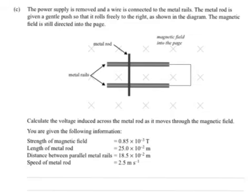The power supply is removed and the wire is connected to the metal rails. The metal rod is given a gentle push so it rolls freely to the right as shown in the diagram. The magnetic field is still directed into the page. This is a generator situation.